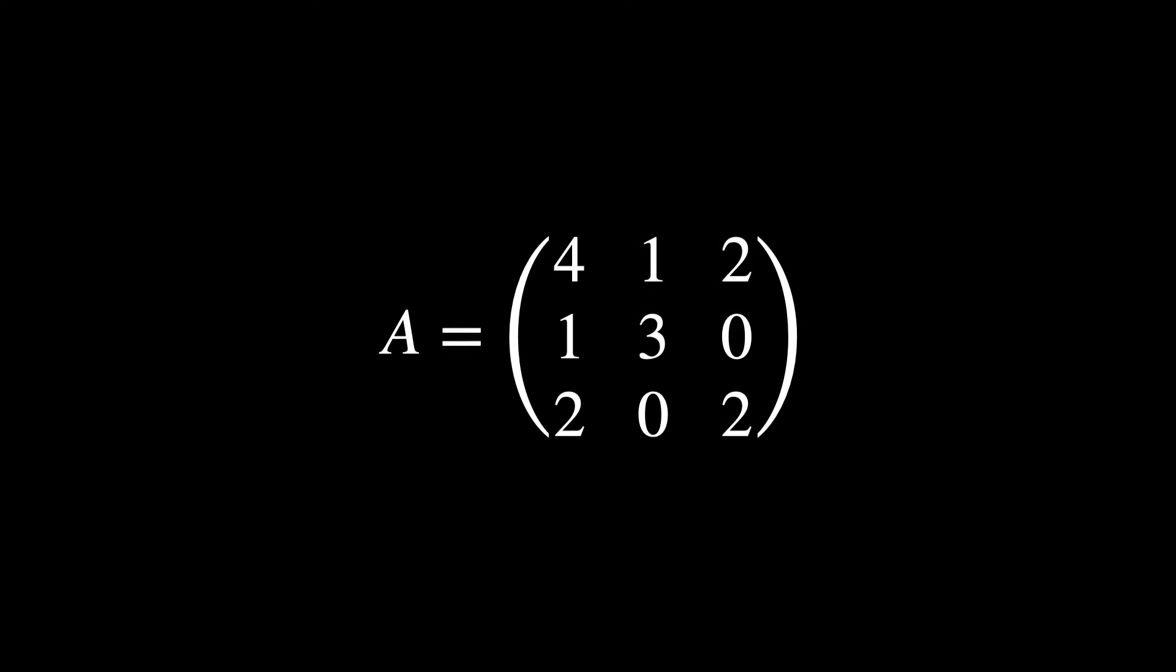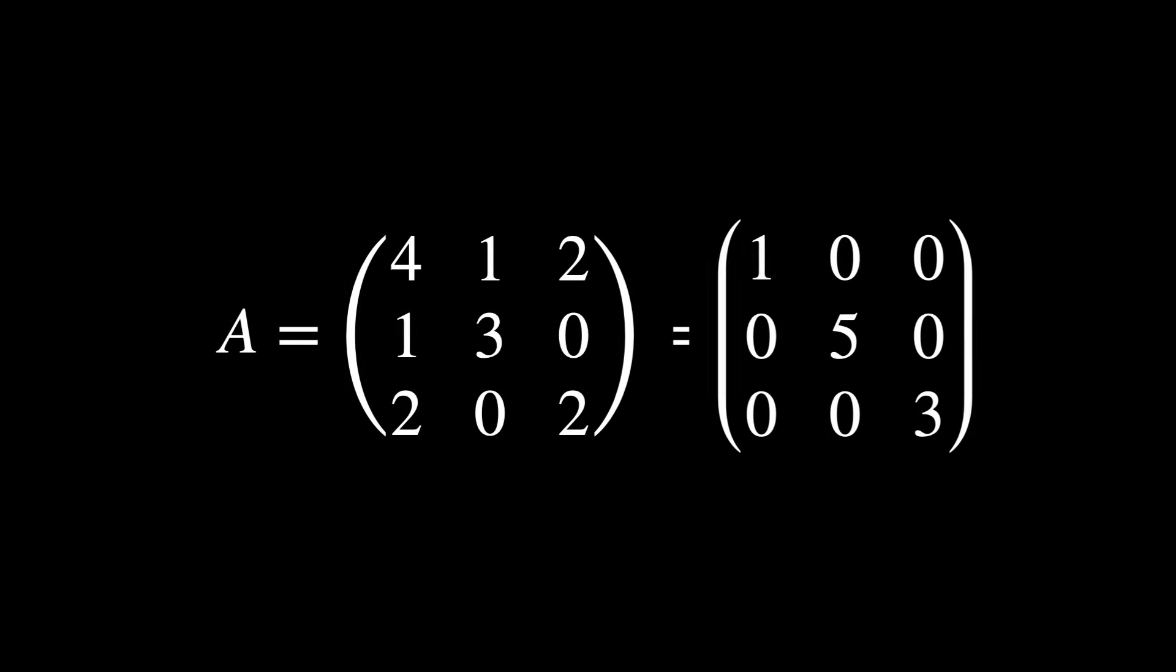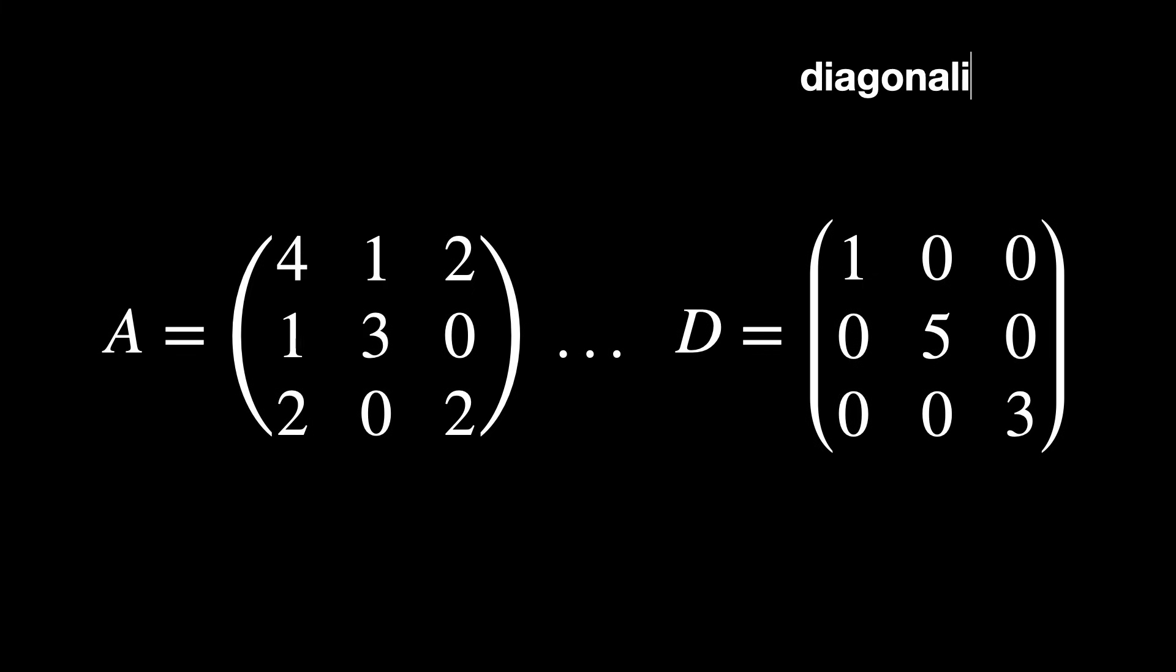When a transformation does have these properties, we say that it is a diagonalizable transformation. We'll see shortly what it is supposed to mean, but first of all let's see why these eigenvectors with their respective eigenvalues are so important.